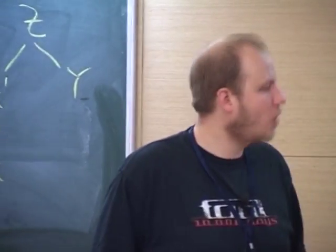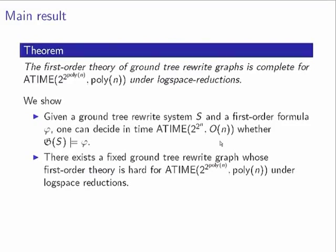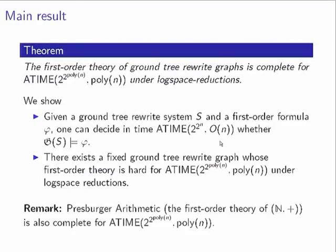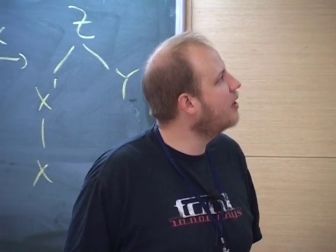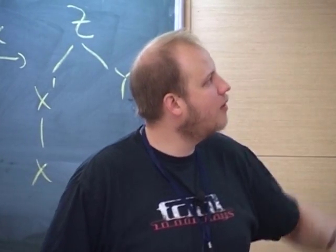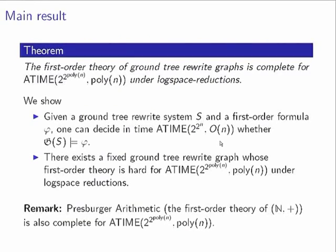In this talk I'm mainly going to focus on the upper bound. It is worth mentioning that Presburger arithmetic — the first-order theory of natural numbers with addition — is complete for this class. So the model checking problem for ground tree rewrite systems with respect to first-order sentences has the same complexity.